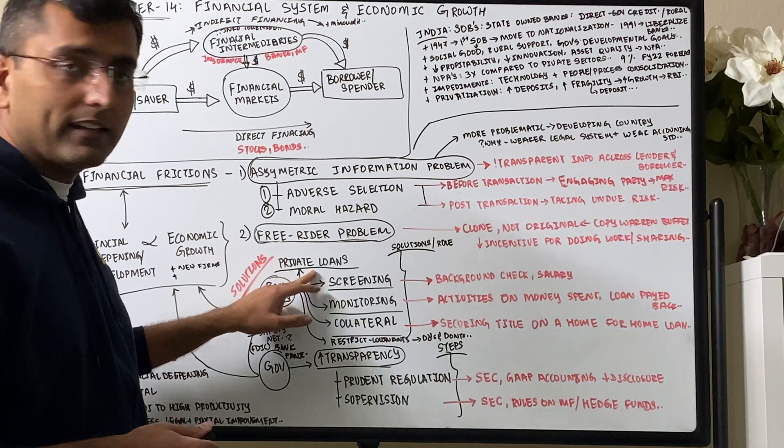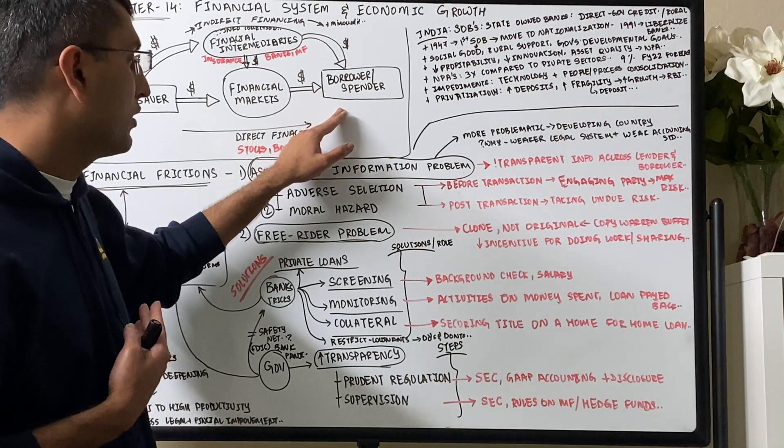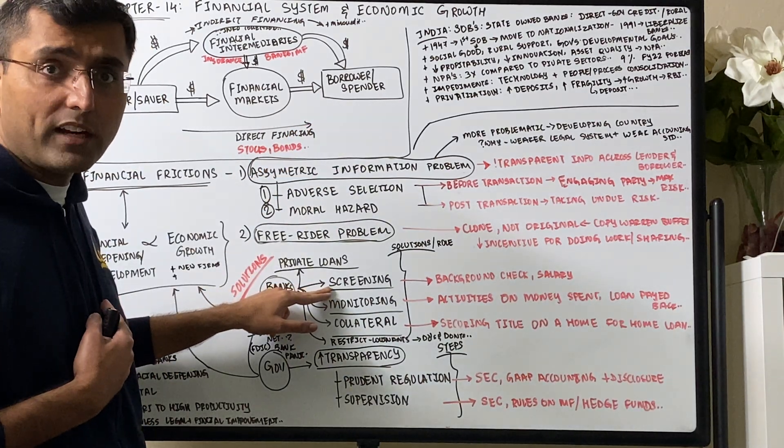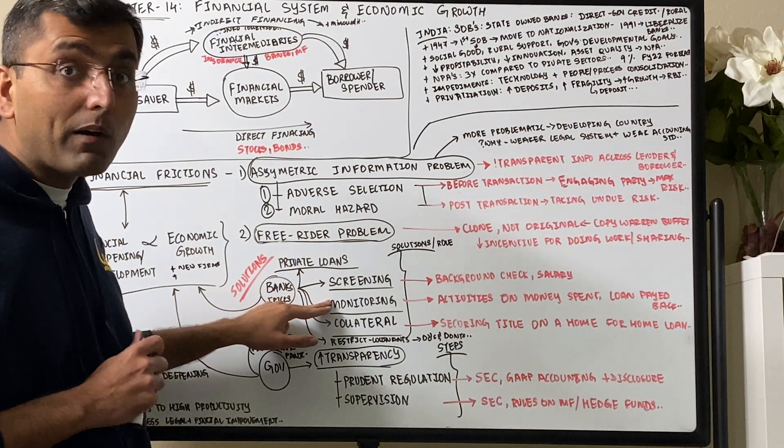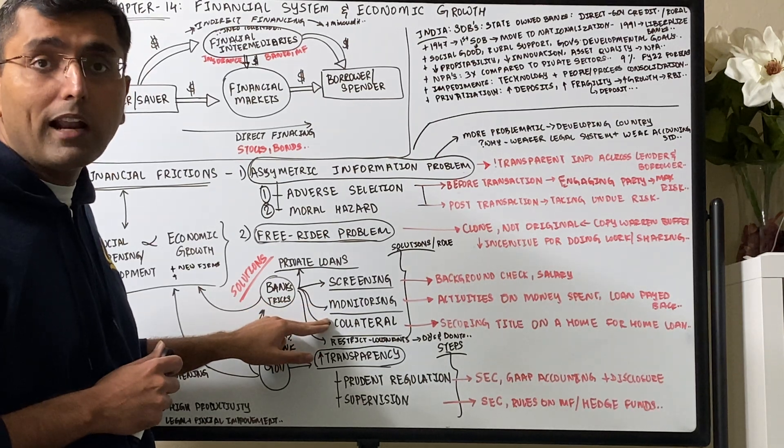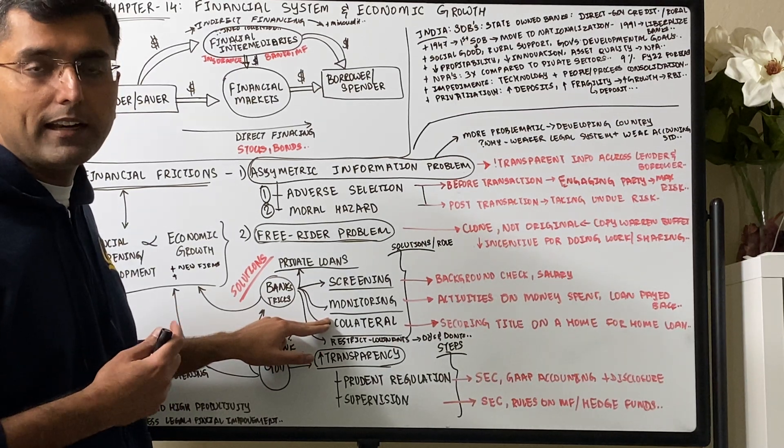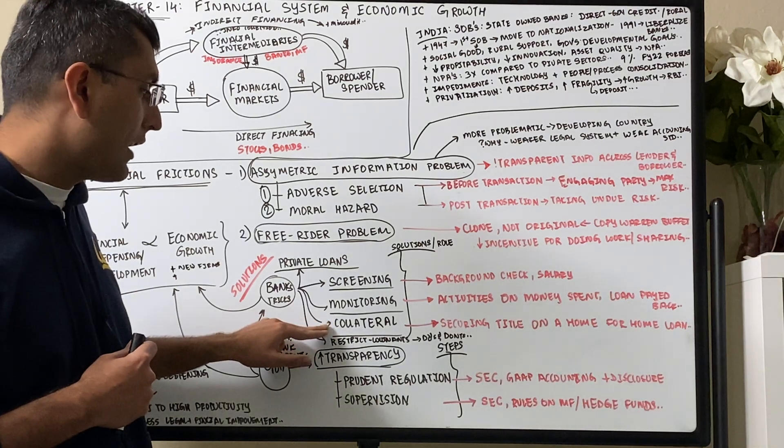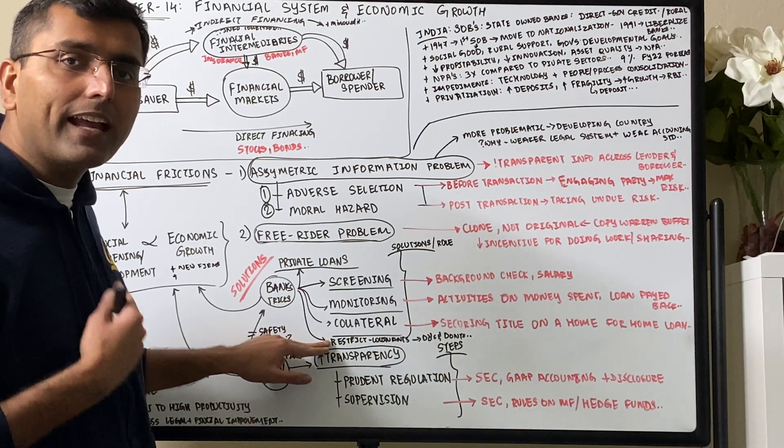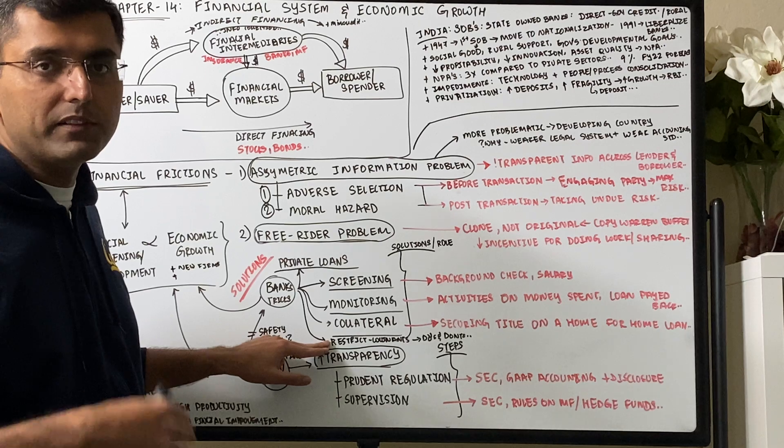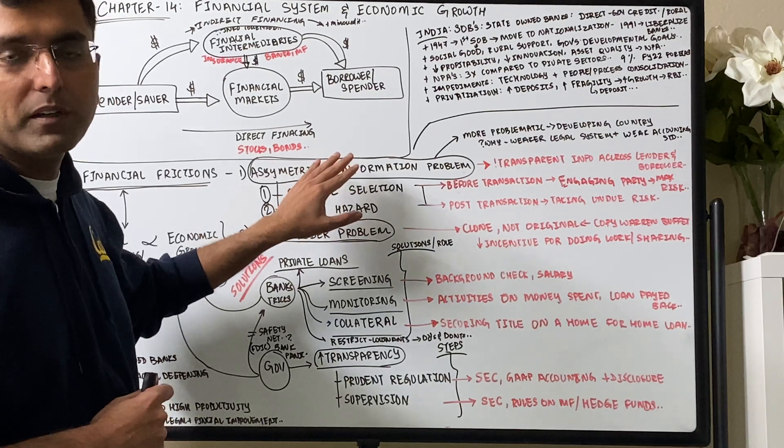There are two big solutions that financial intermediaries can do. First, private information. They can collect information and give private loans. They can assess the credit worthiness of the borrower by screening them, doing background checks, checking out what their monthly pay stubs look like, what's their salary, monitoring their activities, how are they spending the money they're spending. Using a collateral to give it before giving a home mortgage, they'll actually own the title to the home and they'll only give you the title back once you have paid back the loan. So using a collateral, and even like restrictive clauses that they can put in saying, hey, you can only spend this money for X purposes even if they give you the loan.